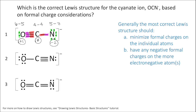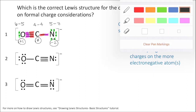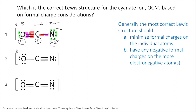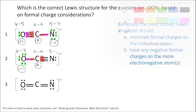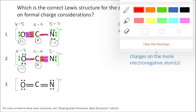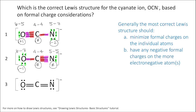For structure two: oxygen has six valence electrons and I've assigned it seven electrons, so oxygen has a formal charge of negative one. Carbon has four valence electrons and I've assigned it four electrons, so carbon has a formal charge of zero. Nitrogen has five valence electrons and I've assigned it five electrons, so nitrogen has a formal charge of zero.